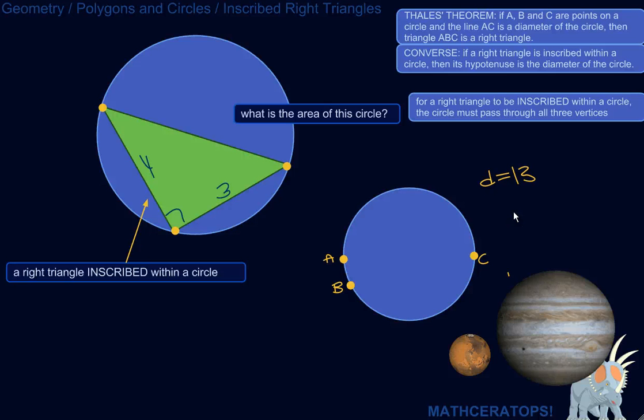Thales was considered the first philosopher of Western civilization and likewise the first scientist. He lived about 2,500 years ago, and there's a theorem named after him, although sometimes people ascribe this theorem to Pythagoras. They all lived around the same time and did a lot of the same work.